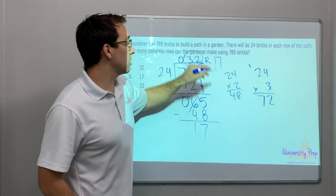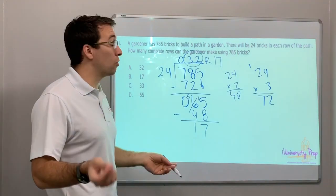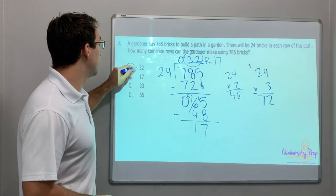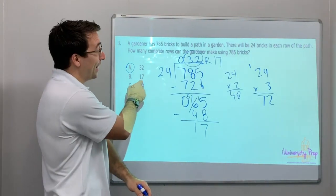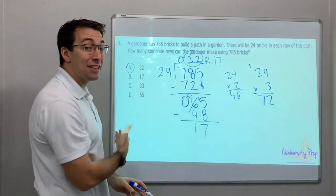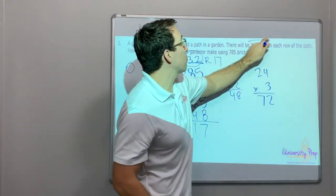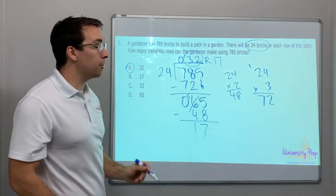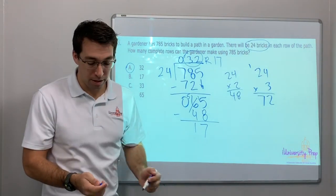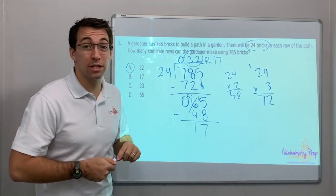Our answer is 32 complete rows. Look, they're trying to trick you. There's not 33 rows. That's 17. You have to have 24 bricks per row. So 32A is our answer. Catch the next few division questions next video.